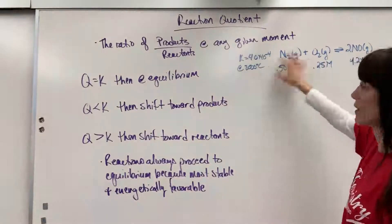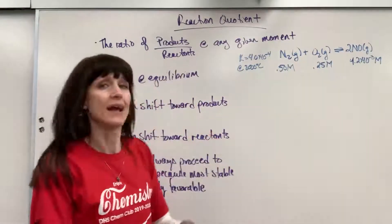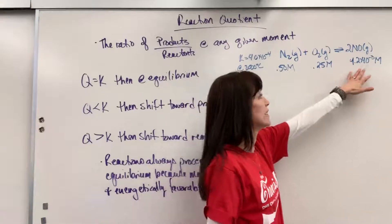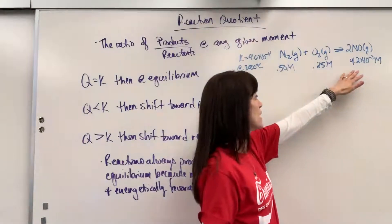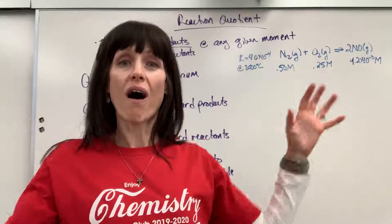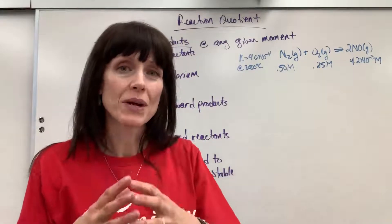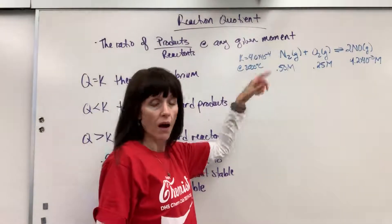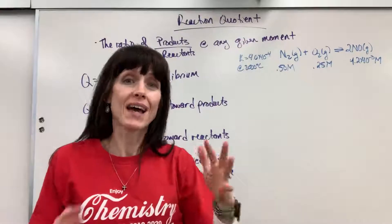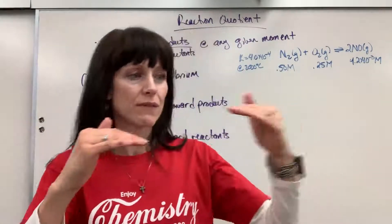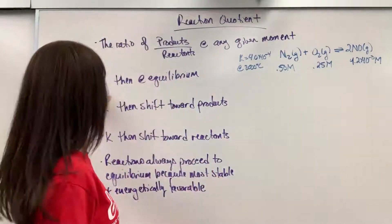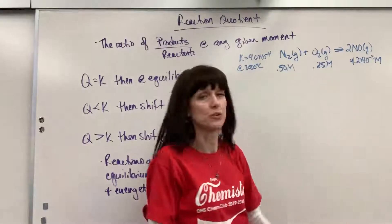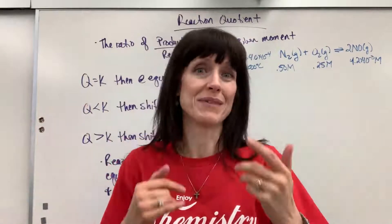For example, right here, I have a chemical reaction, and at this particular moment, here are the concentrations: the nitrogen is 0.5, oxygen 0.25, and the product, the nitrogen monoxide, 4.2 times 10 to minus 3. Now if I plug all of those into our equilibrium expression, and that number came out to be 4 times 10 to the minus 4, that means it's the same thing as K. What that means is we're at equilibrium. The forward rate and the reverse rate are equal.